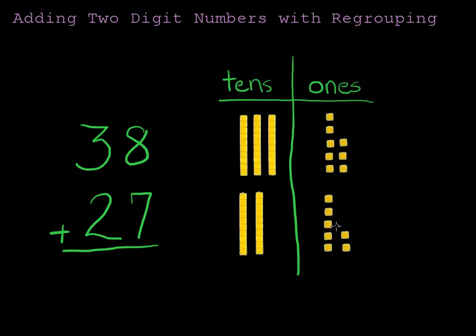Now, when we add, it is very important that we always add the ones column first. And here's why. Because if we add all these ones, eight plus seven is 15. And 15 is a big number. It doesn't fit in this column because we can only put one digit, one number down here. So, what can we do?